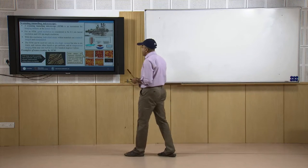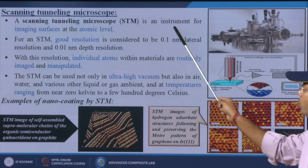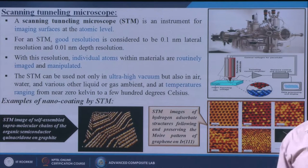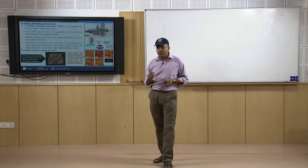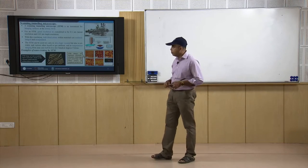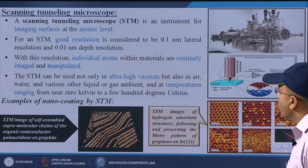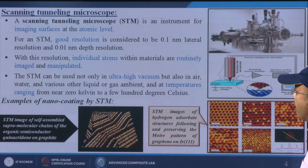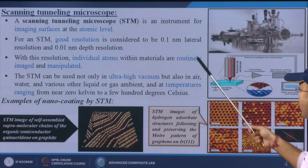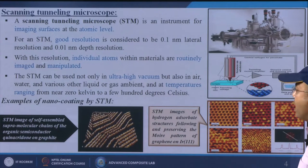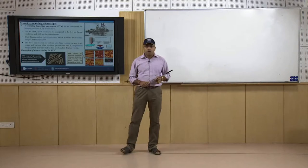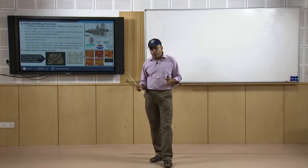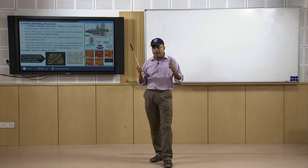First, we are going to discuss the scanning tunneling microscope (STM), which is an instrument for imaging surfaces at the atomic level. For measuring surface morphology at the nano scale, we can use STM. Good resolution is considered to be 0.1 nanometer lateral resolution and 0.01 nanometer depth resolution. With this resolution, individual atoms within materials are routinely imaged and manipulated. The STM can be used not only in ultra-high vacuum, but also in air, water, and various liquid or gas environments, at temperatures ranging from near 0 Kelvin to a few hundred degrees Celsius.